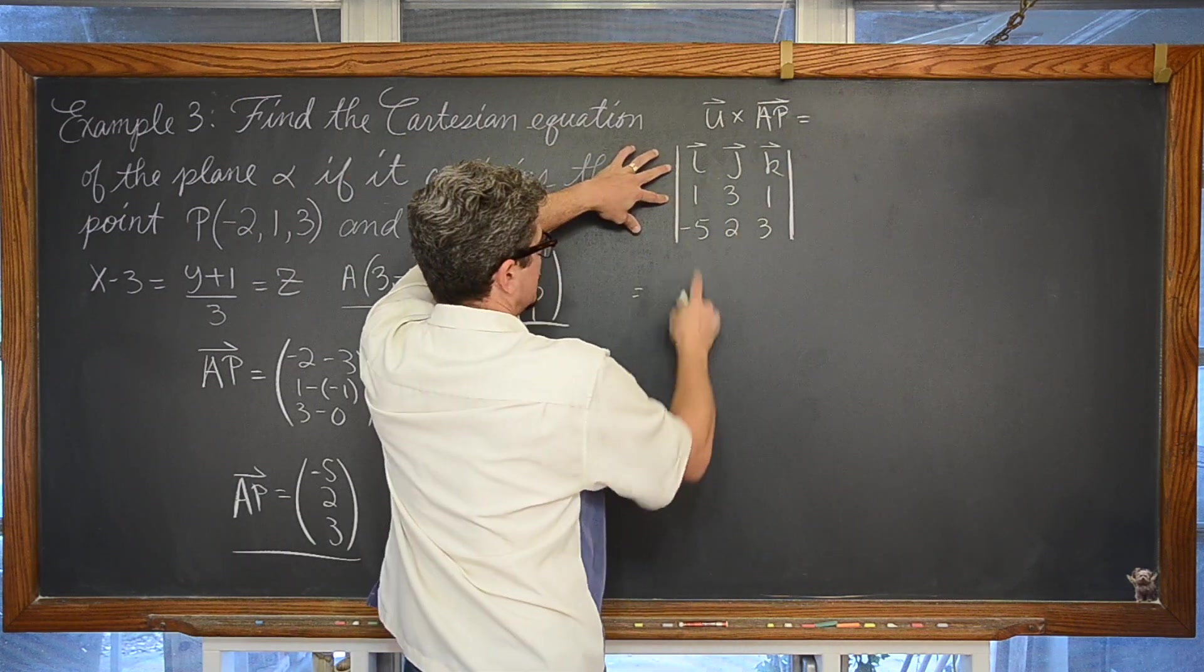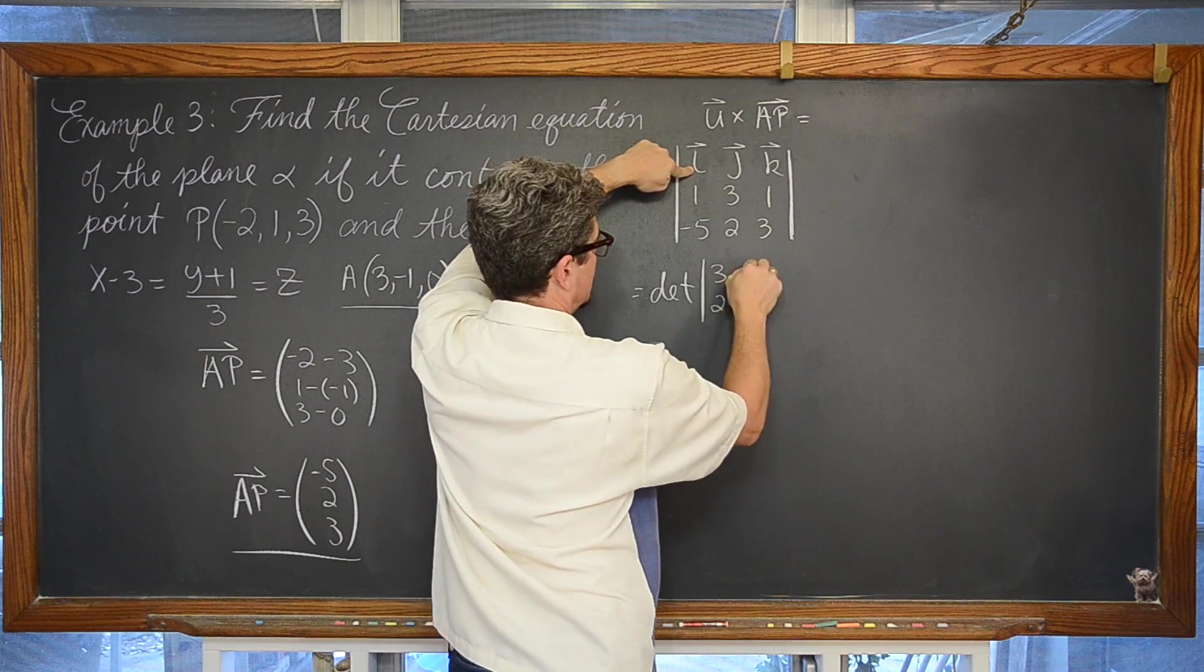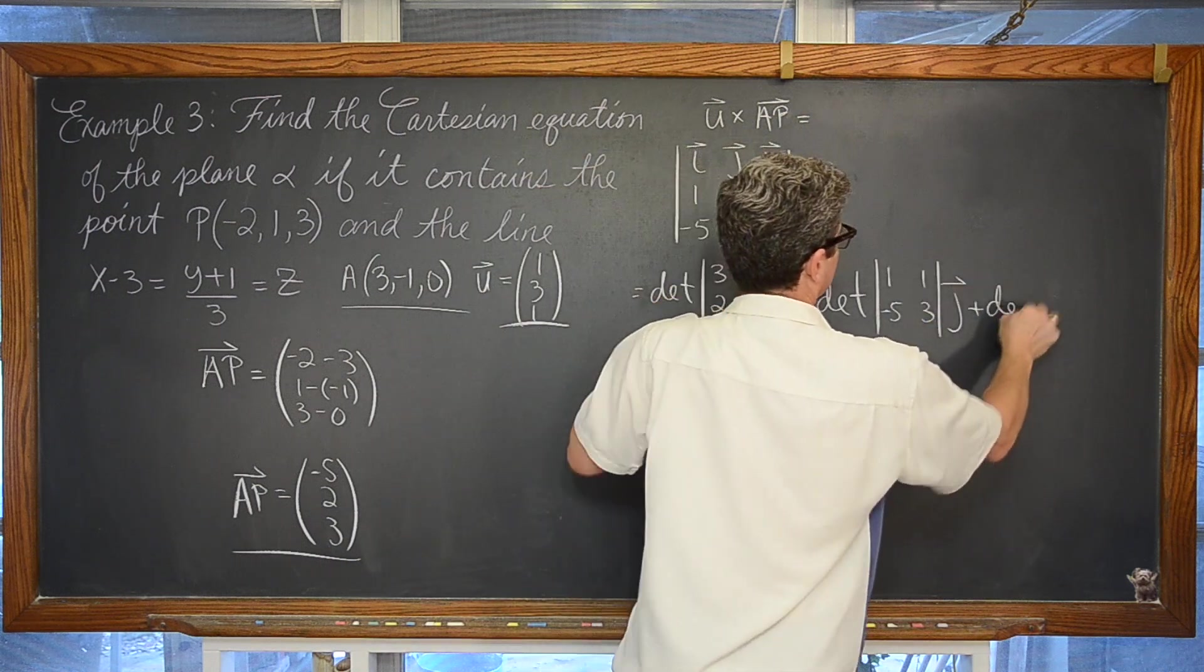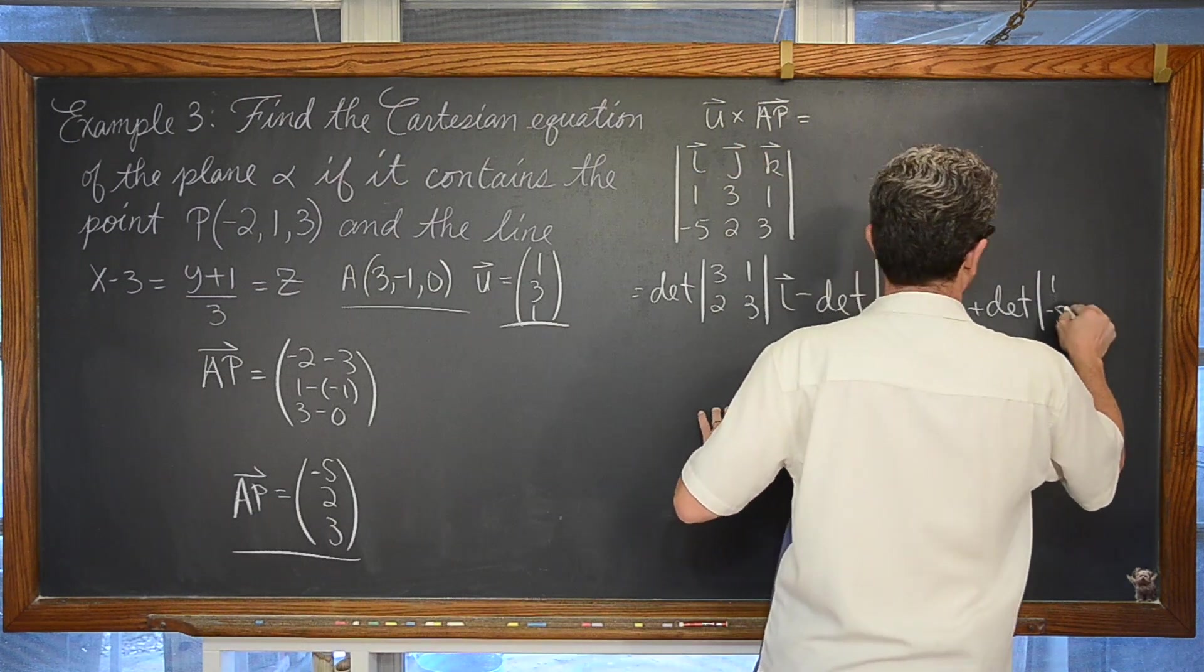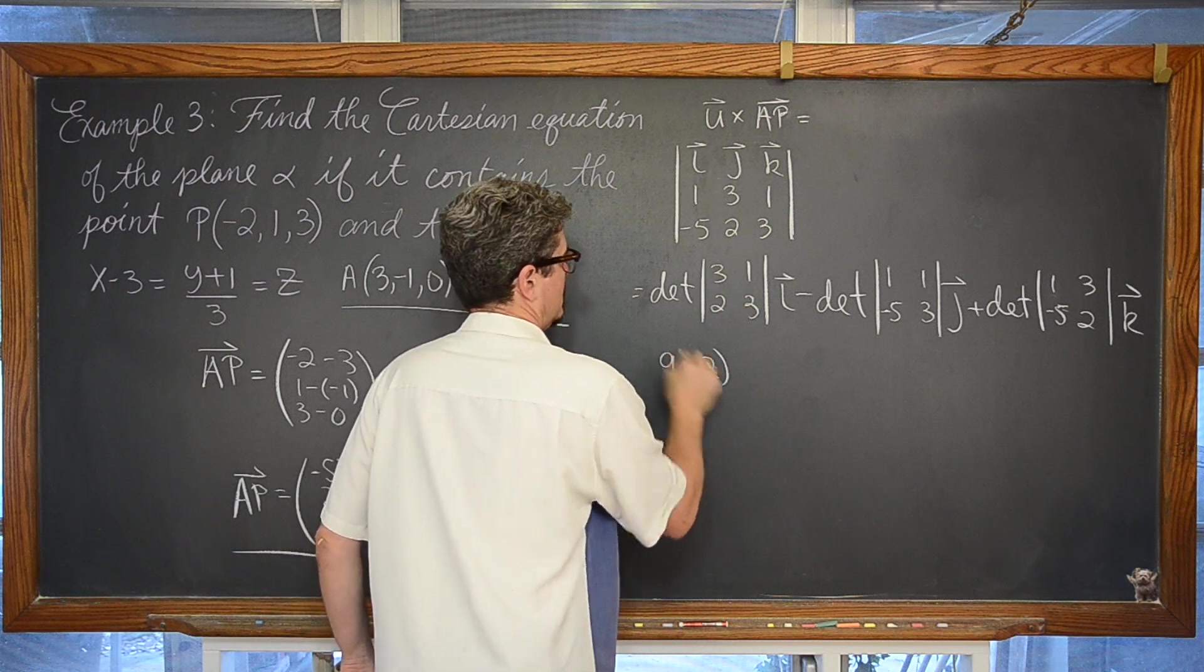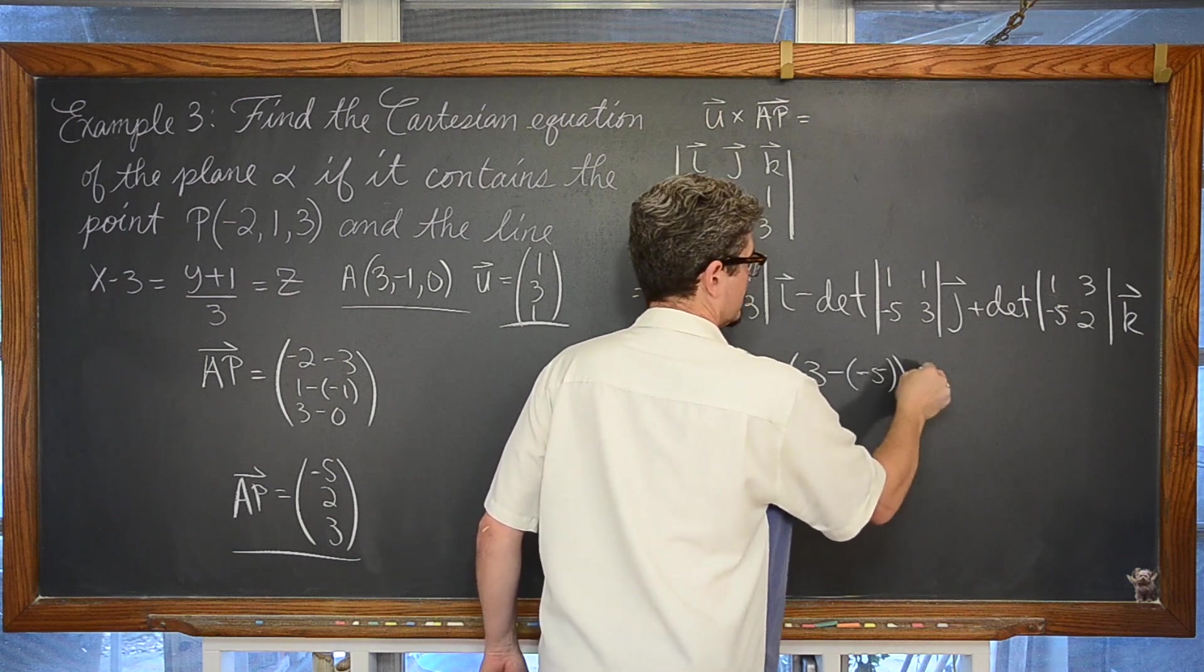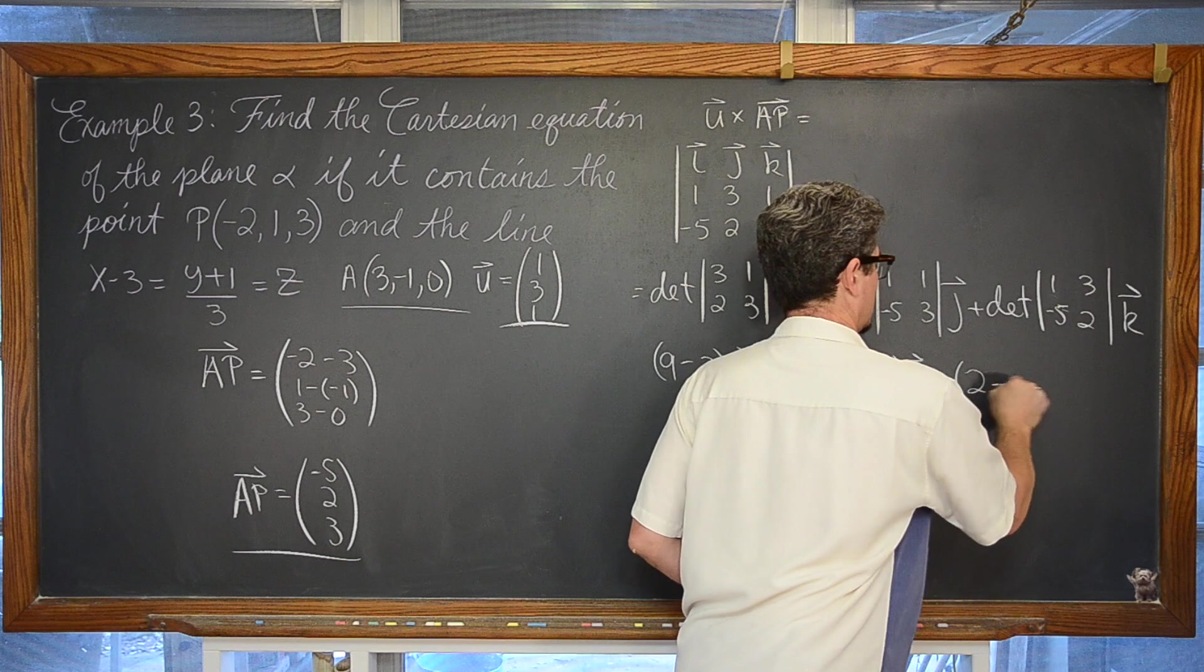This is going to be equal to the determinant of this 3x3 matrix. So the row, column and row that contains the i taken out, that is going to be the coefficient of our i component minus the determinant. Take out the column and row that has the j vector component, plus the determinant of the 2x2 matrix when you take out the column and row that has the vector component k. Work out these little 2x2 determinants. We have 9 minus 2 for vector i minus 1 times 3 is 3 minus negative 5 for vector j plus the determinant 2 minus negative 15.